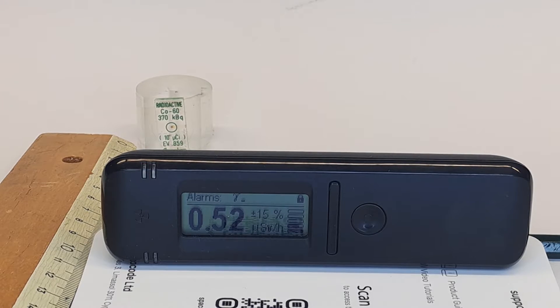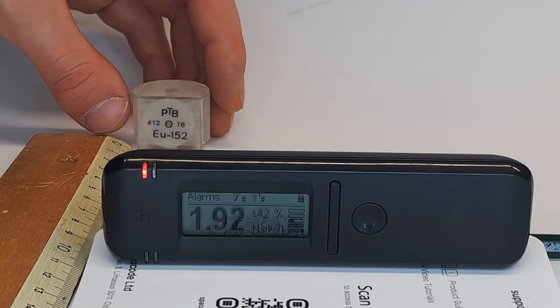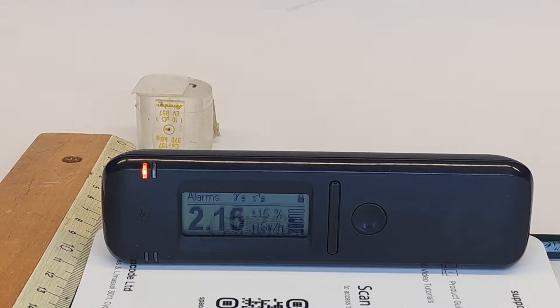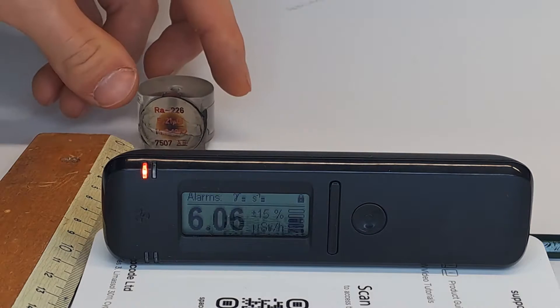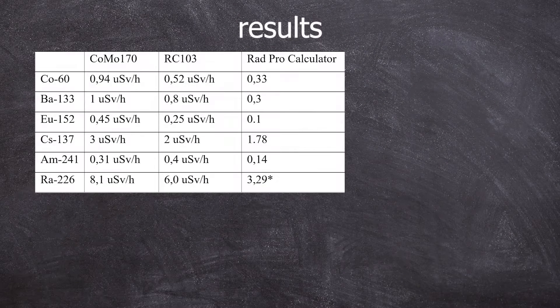We are comparing the dose rate of Cobalt-60, Barium-133, Europium-152, Cesium-137, Americium-241 and Radium-226. Most of them were purchased some 30 to 40 years ago and were sold as having an activity of 370 kBq. Not all of them, of course, and for some I couldn't even find certificates.